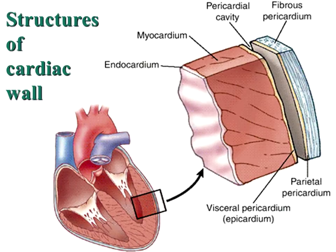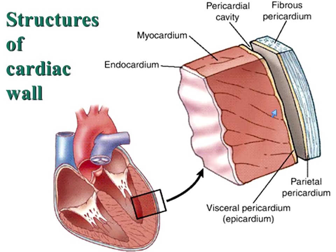The pericardium is the outermost part of the heart. It is composed of a fibrous layer and a serous pericardium. The serous pericardium is composed of a parietal layer and a visceral layer. The visceral layer is actually continuous with the epicardium — the epicardium and the visceral layer of the serous pericardium are essentially one and the same. The pericardial sac has about 50 mLs of fluid in it, which serves to protect the heart from friction. The myocardium is the thick middle muscular layer, and the endocardium is a thin membranous layer lining the chambers of the heart.